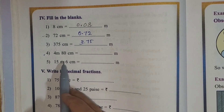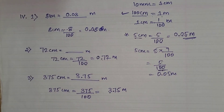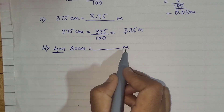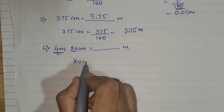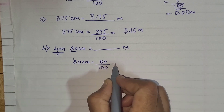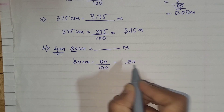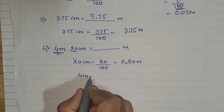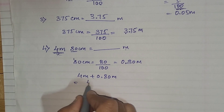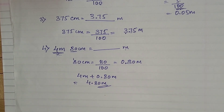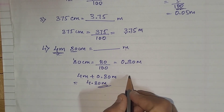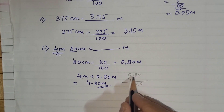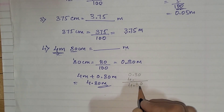Fourth one: 4 meters 80 centimeters equals dash meters. The 4 meters is already in meters, so keep it. Convert 80 centimeters: 80 divided by 100 equals 0.80 meter. Add 4 meters plus 0.80 meter to get 4.80 meters as your answer.